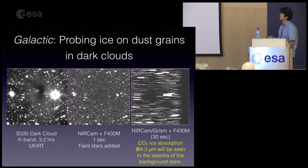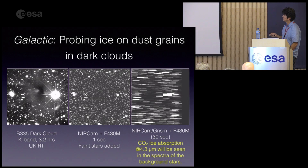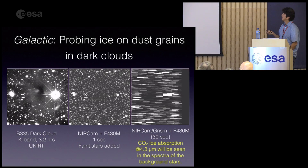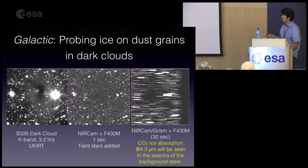Here is a galactic science example using a simulated image with a fairly narrow filter, so each spectrum is short, which helps avoid confusion. The idea is that there is a dark cloud; at 4 microns you can penetrate this dark cloud and see background stars. If the dark cloud contains dust grains with ice, we might detect absorption features — in this case at 4.3 microns. This is one way to use this mode.